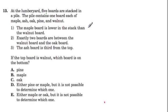And they give us some logical facts right here. Wherever the maple is, it's lower in the stack than the walnut board. So walnut is above maple. Exactly two boards are between the walnut board and the oak board. Okay, that's somewhat helpful.